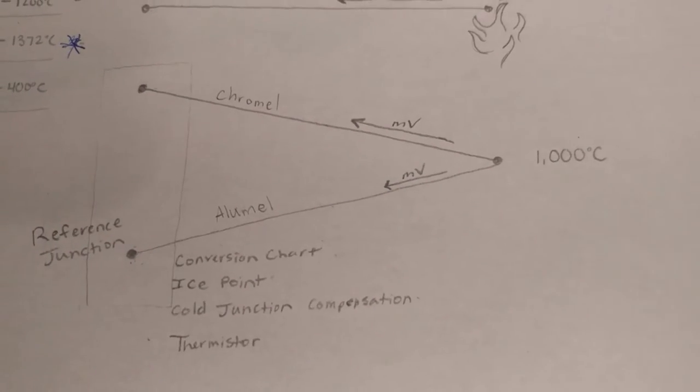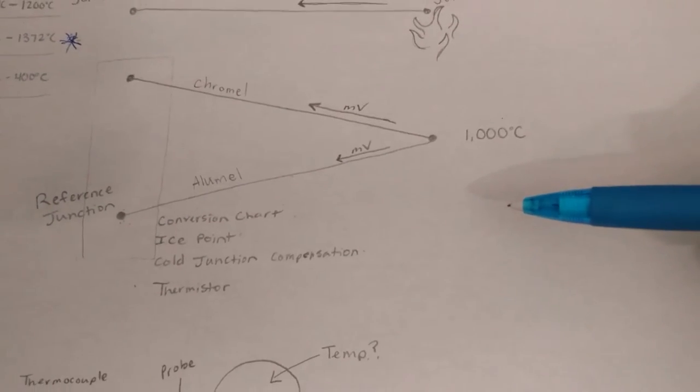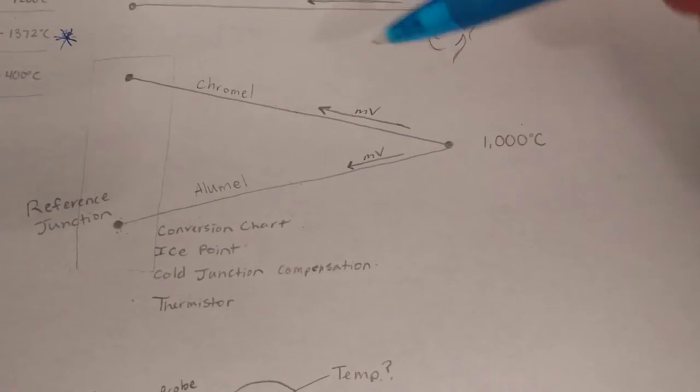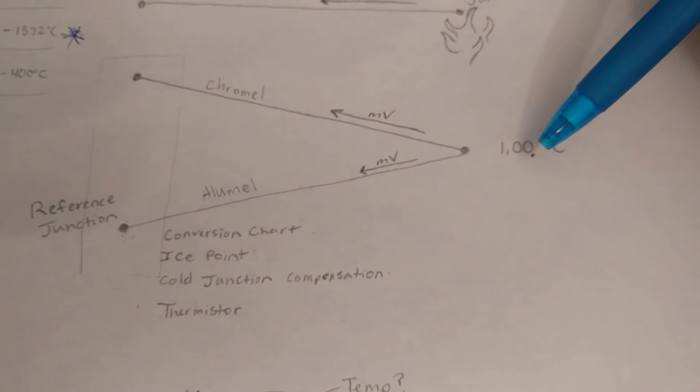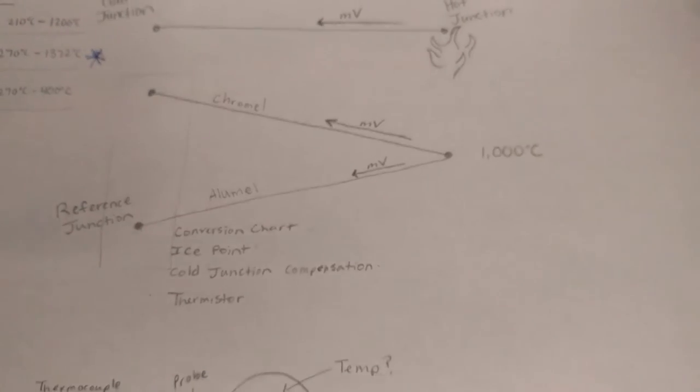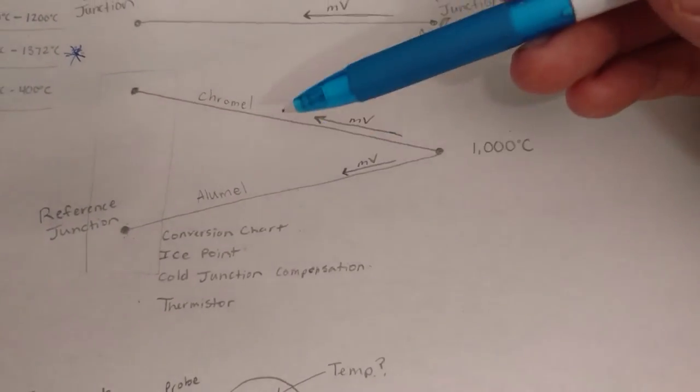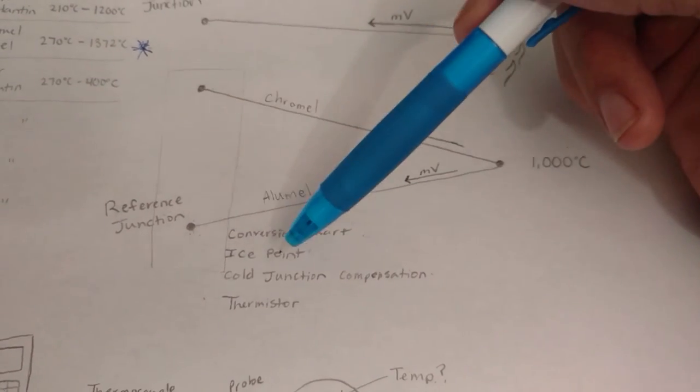That's what it's looking for because scientists have calculated what the millivolt signal needs to be depending on temperature. They calculated this chart, this big table, for these different wires based on a reference junction being at ice point.